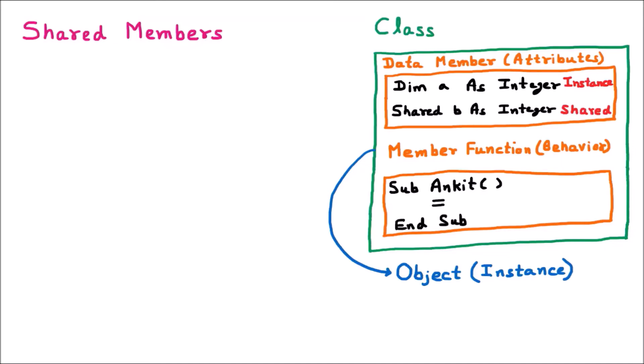Now we are learning the shared members. If we talk about the class, a class consists of various members. The first member is called the data member, which also has another name: the attribute. Whenever we declare variables like 'Dim a As Integer' or 'Shared b As Integer', these variable declarations are called data members or attributes.